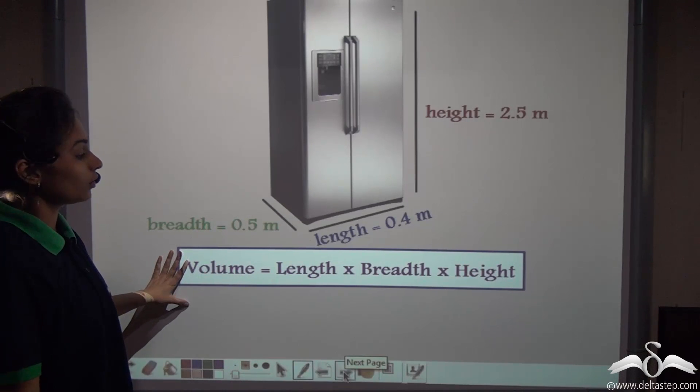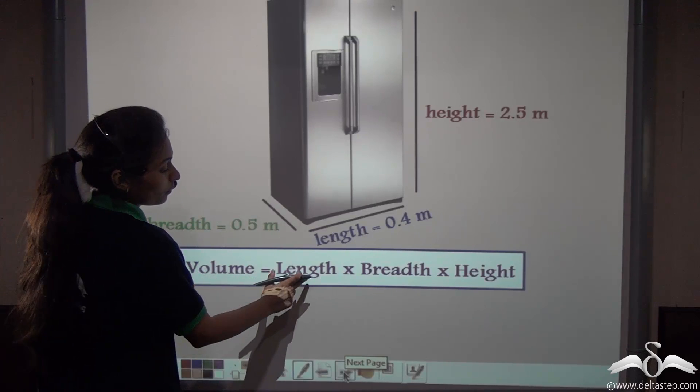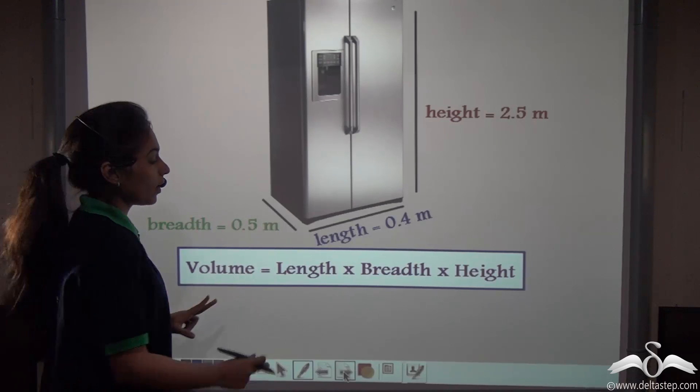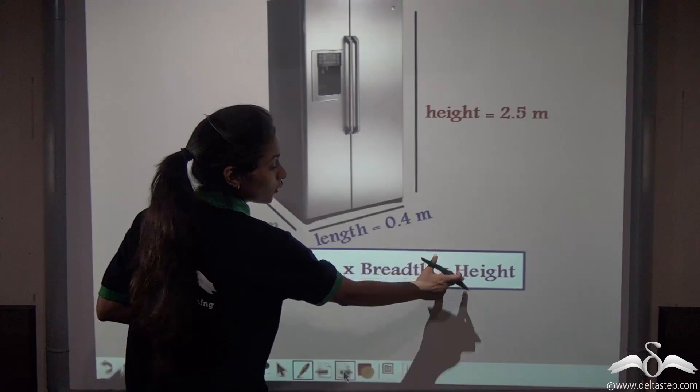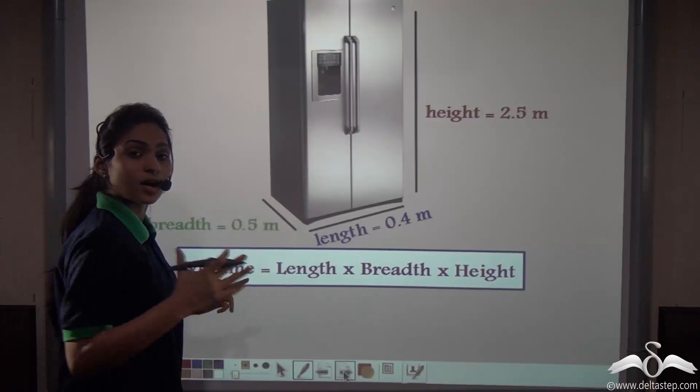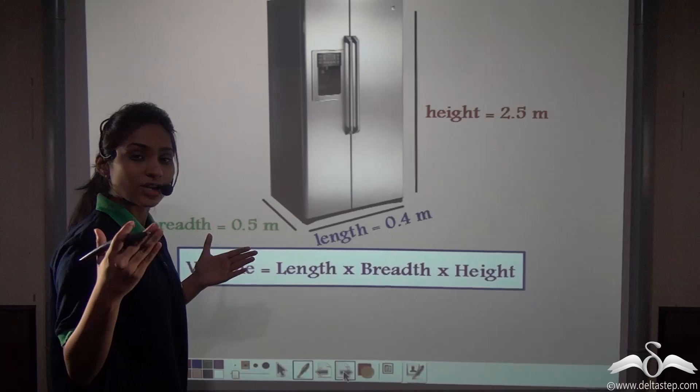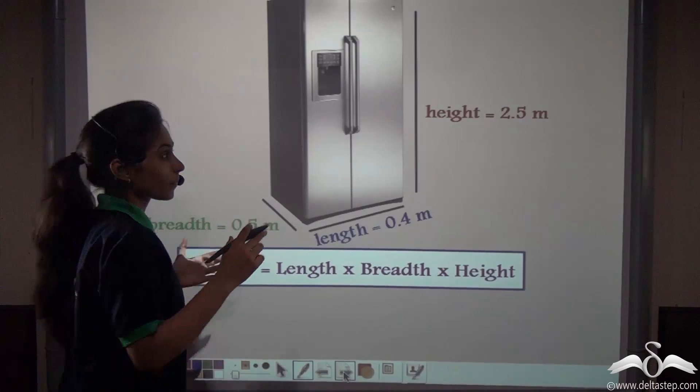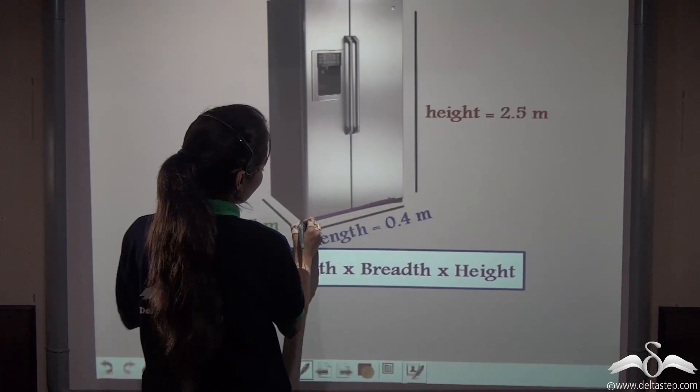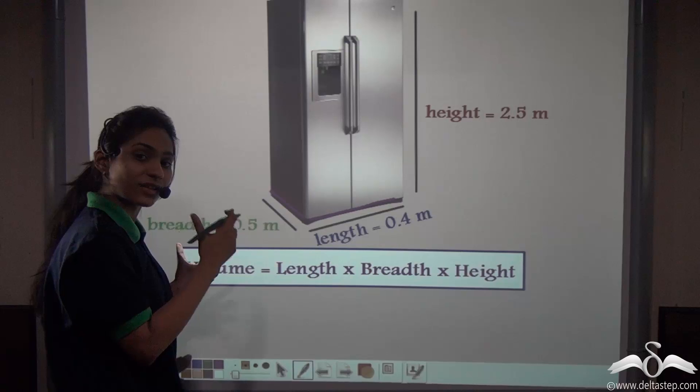Now how can we find out the volume of this refrigerator? The volume can be found out by length into breadth into height. Why can we find out the volume as length into breadth into height? Well, this refrigerator is a cuboid. A cuboid is actually a rectangle with some thickness. This rectangle has a length, has a breadth along with this height. So this is the three dimensional form of the rectangle.